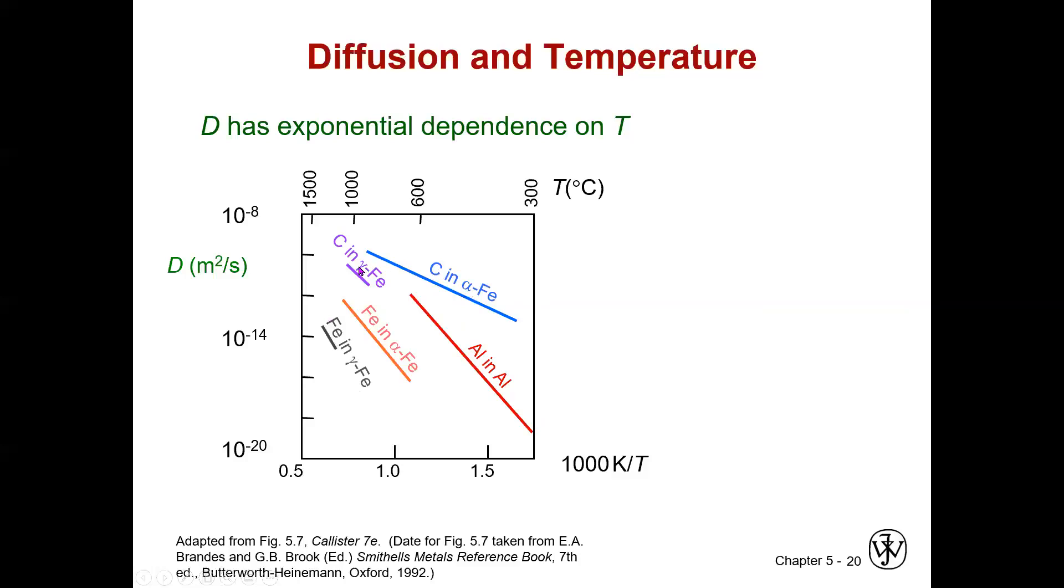This alpha iron versus gamma iron is something that we'll get into a lot more later. But the alpha iron is your room temperature iron. This is body centered cubic. And gamma iron is a higher temperature iron where you do most of your steel processing. And this is actually a face centered cubic material.